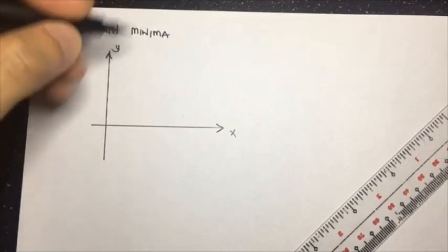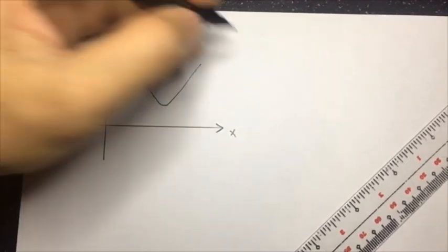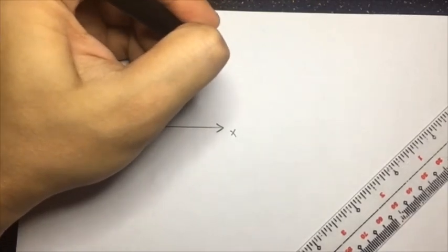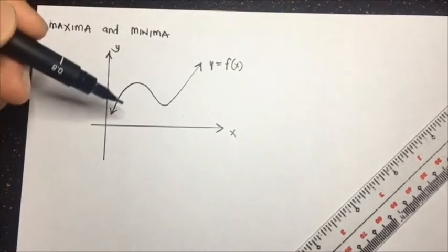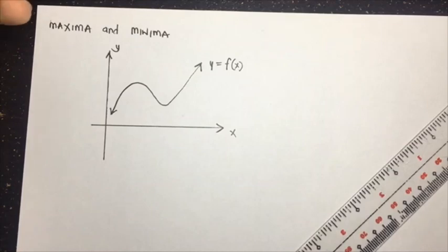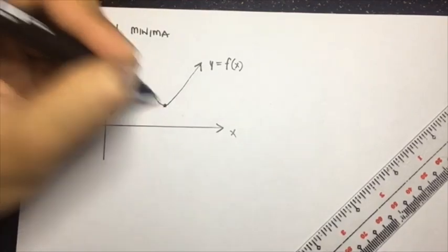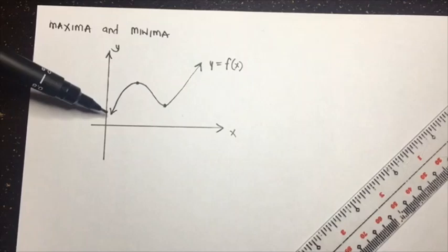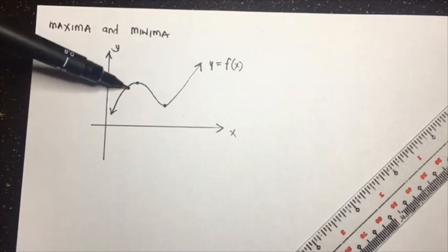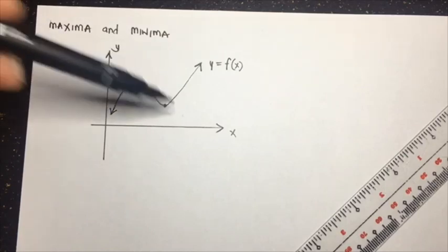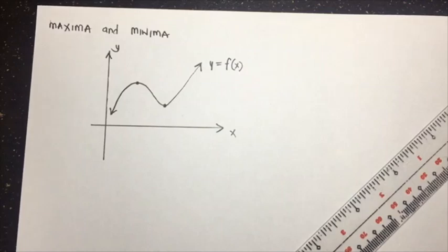Say for example, we have this graph of y as a function of x. We can directly observe that we have two points where the trend of the curve changes. As we go from left to right, at this point there is a change from increasing to decreasing, and at this other point, from decreasing trend to increasing trend. Those are called our maxima and minima, or our critical points.